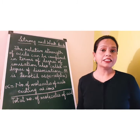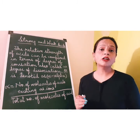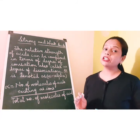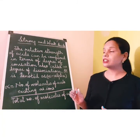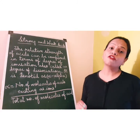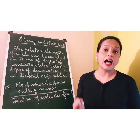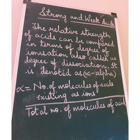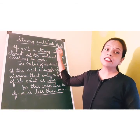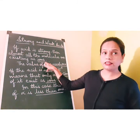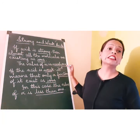The relative strength of acids can be compared in terms of degree of ionization, also called degree of dissociation. It is denoted as alpha (α). Alpha equals the number of molecules of acid existing as ions divided by the total molecules. If the acid is strong, almost all the molecules exist as ions and the value of alpha is nearly one.